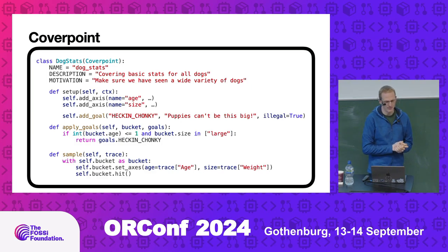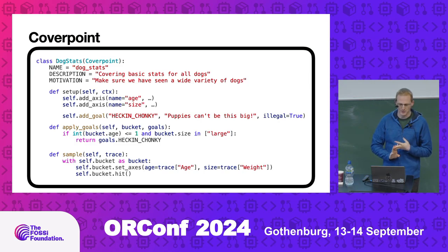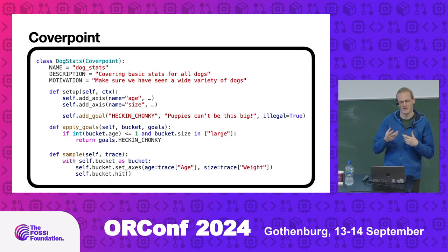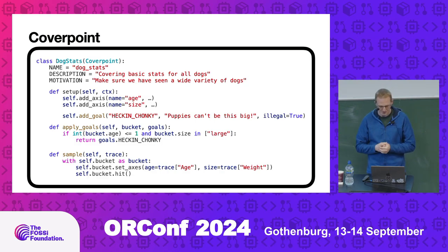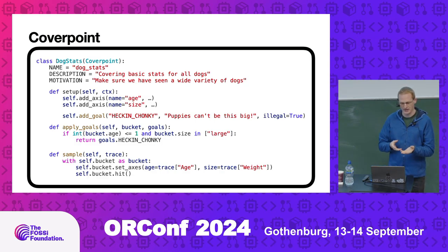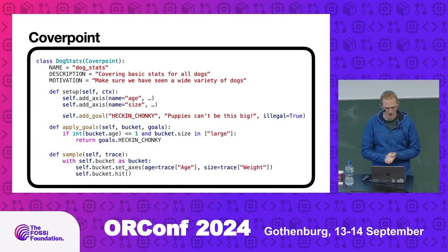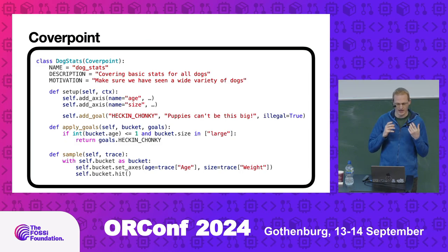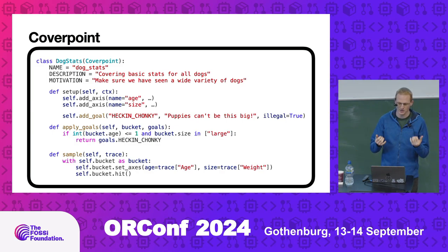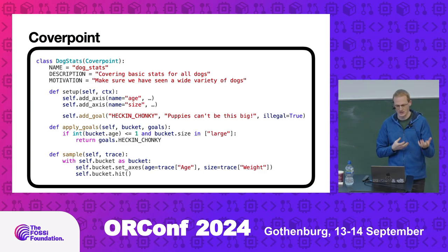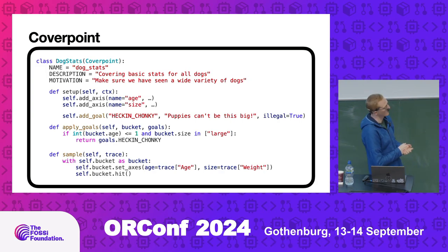Here's an example of creating a cover point. At the top there's a default name, description, and motivation. Descriptions are what you are covering; motivation is what you're trying to cover — the aim of the cover point — and you can check the two marry up when doing a coverage review, in case things have shifted along the way. You have a setup function where you add your axes, and you can add a goal where you say this is an illegal one or increase your target hit count. You then apply the goal, specifying which bucket combinations it applies to. Then there's a sample function which basically gets a trace object from your testbench, full of all the data that you want, and then you can pick out the bits that are relevant and assign it to the bucket.